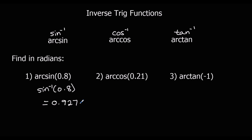Arccos 0.21 — shift cos 0.21 — and that to three significant figures is 1.36. So these are radians. And arctan minus 1, so shift tan minus 1, and that gives us minus one quarter pi.